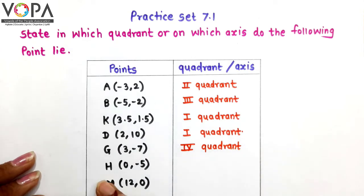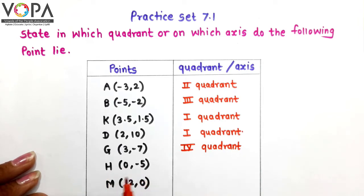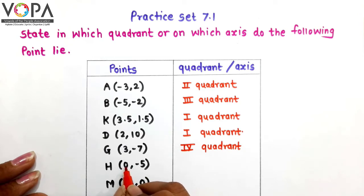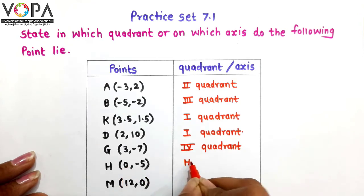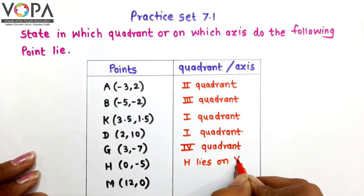Next point is point H. The coordinates of point H are 0, minus 5. Here the x-coordinate of point H is 0. Therefore H lies on the negative y-axis.